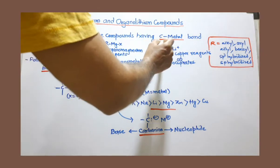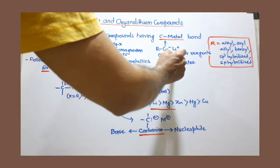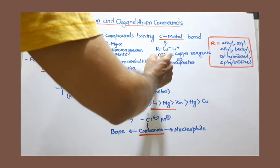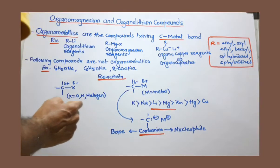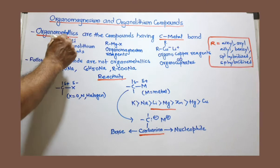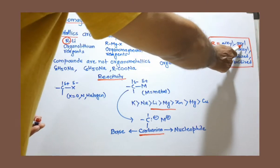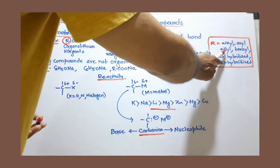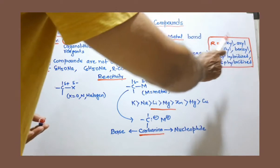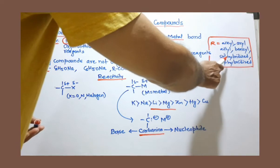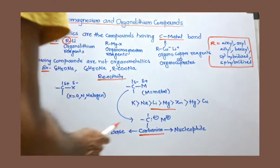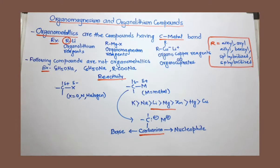Another is this R₂CuLi, means organocopper reagents. They are also called organocuprates. Now see here, this R means not just alkyl group. It may be aromatic ring, aryl group. It may be allyl, it may be benzyl, or it may be sp² hybridized, sp hybridized carbon, or sp³ hybridized carbon.